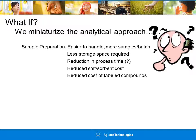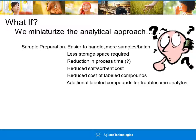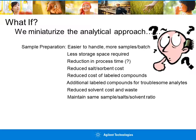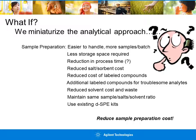Reduced cost of labeled compounds — for troublesome compounds, adding additional labeled compounds wouldn't be cost-prohibitive; for instance, Captan-D6 and Folpet-D4. Reduction in solvent cost and waste based on less sample, and therefore less solvents are required. We also maintain the same dispersive SPE kits already in existence. One key feature of this scaled-down approach is that we maintain the same sample-to-salt-to-solvent ratio, and therefore we would expect to achieve similar results as with the validated QuEChERS method.